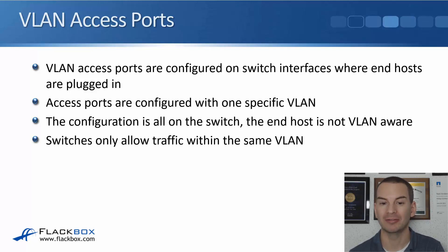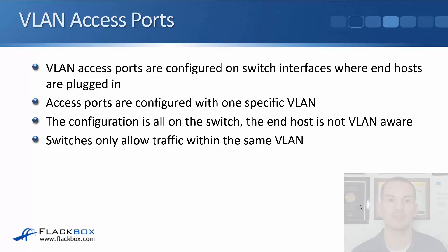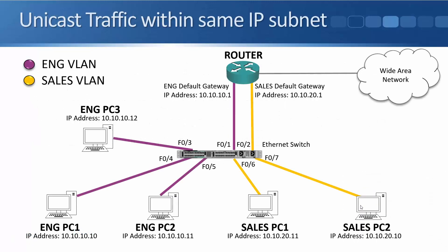Switches only allow traffic within the same VLAN — that's the benefit we get from configuring VLANs. They segment our campus LAN into smaller broadcast domains. In this example, we'll have an engineering VLAN and a sales VLAN. All engineering PCs and the router interface in the engineering IP subnet go into the engineering VLAN, and all sales PCs and the router interface for the sales subnet go into the sales VLAN.